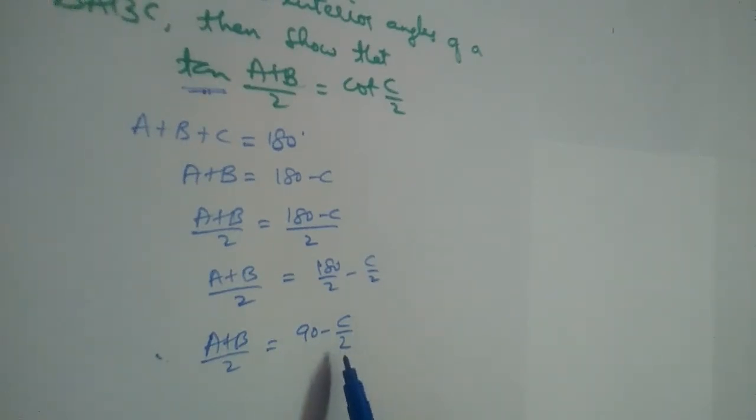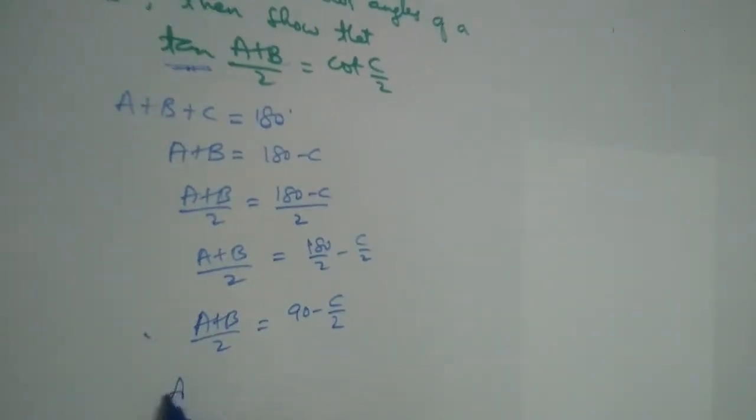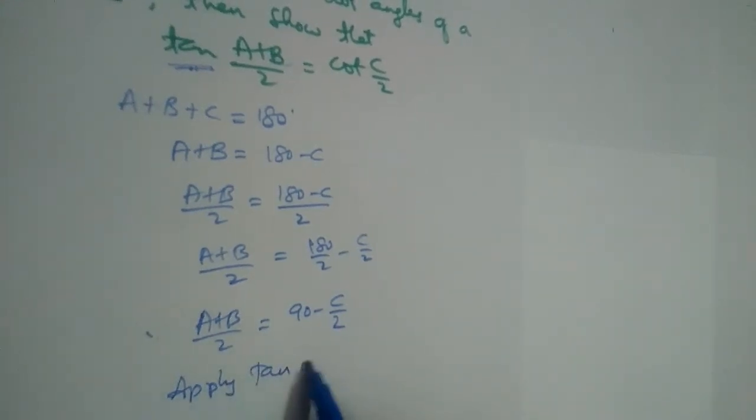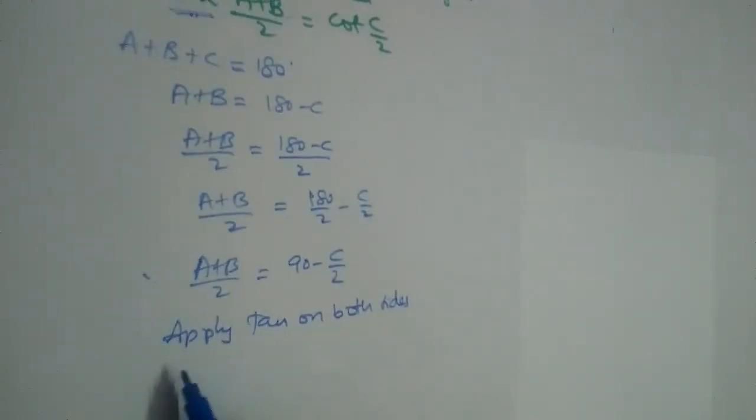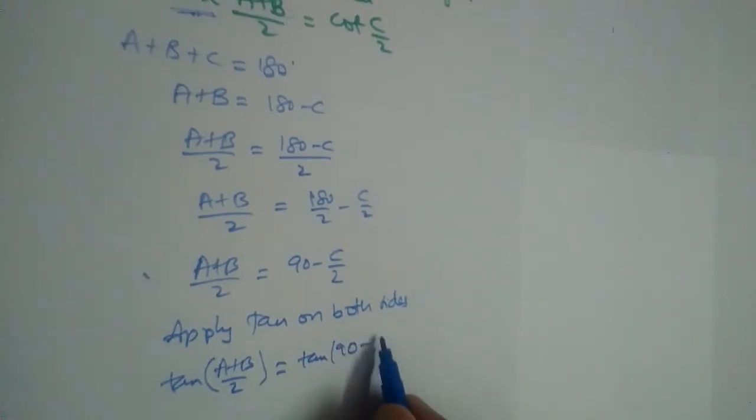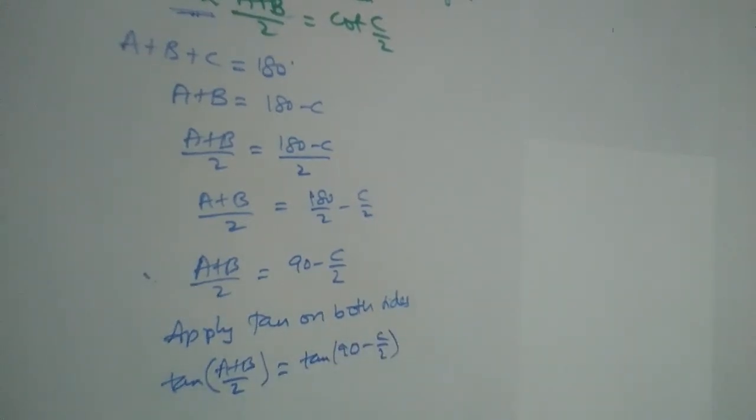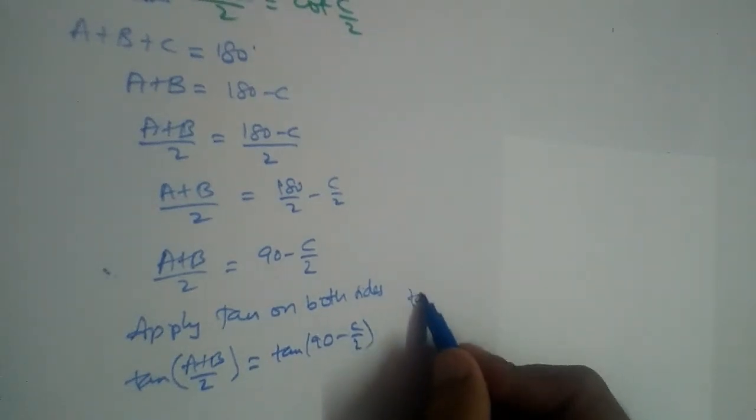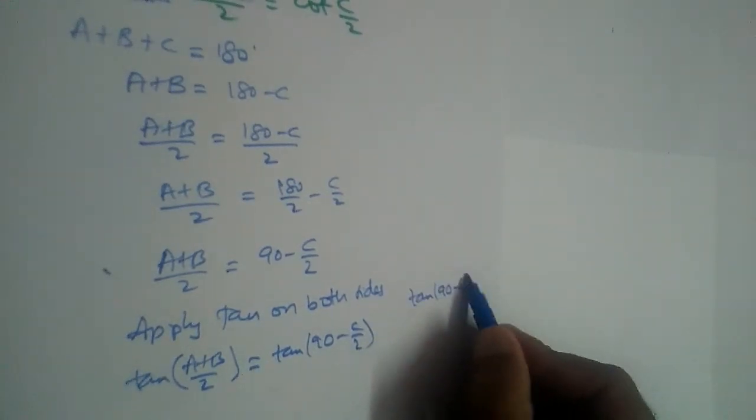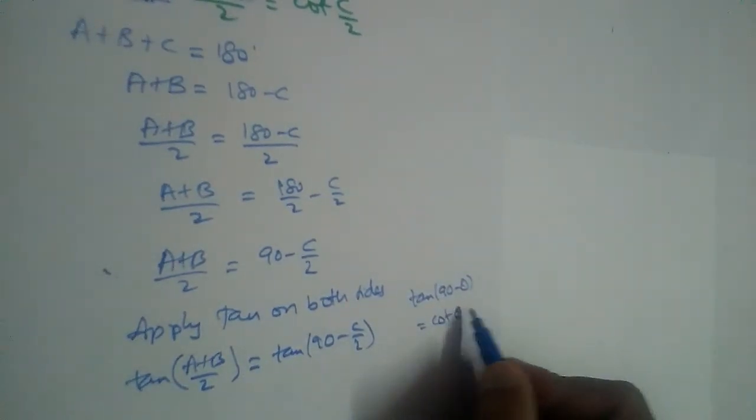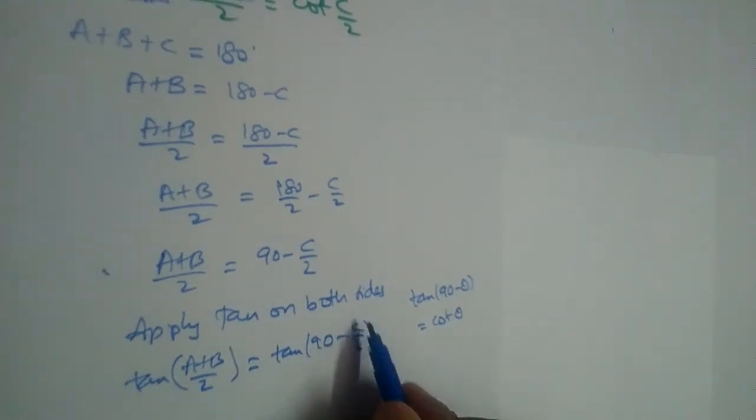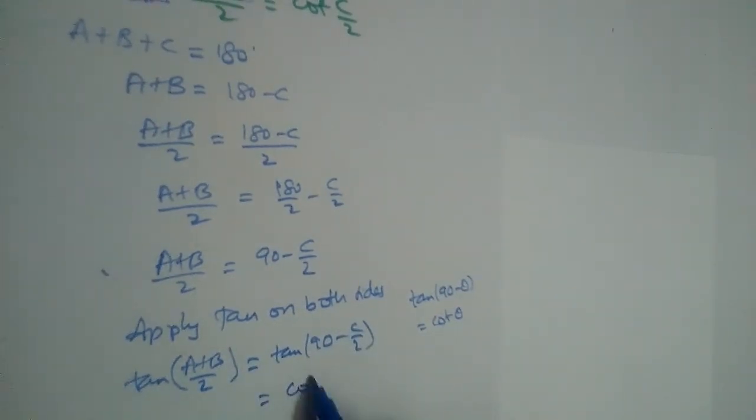So it will be tan((A+B)/2) is equal to tan(90 - C/2). Now we have studied that tan(90 - θ) is equal to cot θ, right. So tan(90 - C/2) will become cot(C/2).